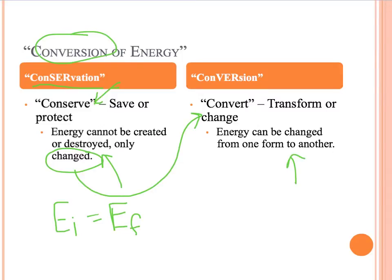So the ideas are very close. Conversion means that energy can actually change forms. Conservation means that even with all of these changes, the total amount of energy should never change.